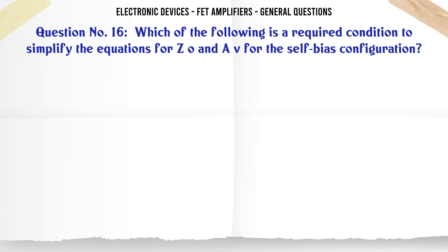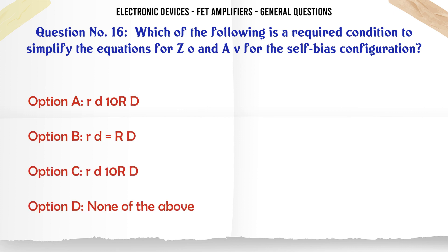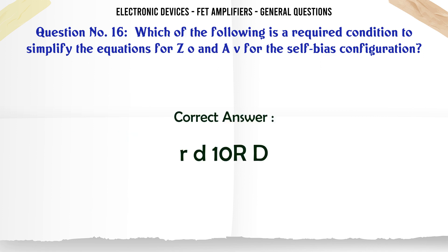Which of the following is a required condition to simplify the equations for ZO and AV for the self-bias configuration? A. RD >> 10rd. B. RD = rd. C. rd >> 10RD. D. None of the above. The correct answer is rd >> 10RD.